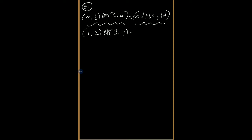So what happens here? A and d gives 1 × 4, plus b × c gives 2 × 3. Comma, b and d means second position and fourth: (2, 4). This is the operation defined.